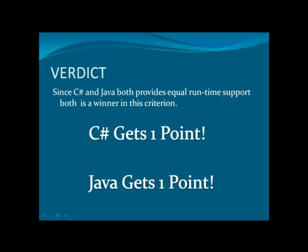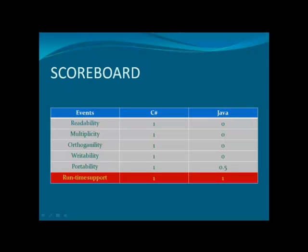Rounding up in the verdict, what we clearly observe is that Java and C-Sharp both adhere to the runtime component. Therefore, Java and C-Sharp equally get points. Having a look at the scoreboard related to runtime support, C-Sharp and Java contain equal points.